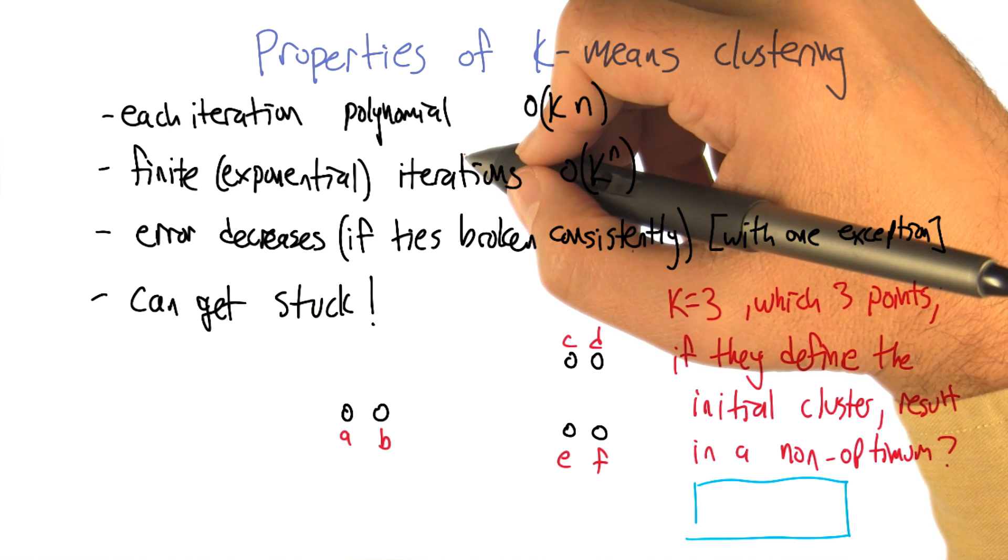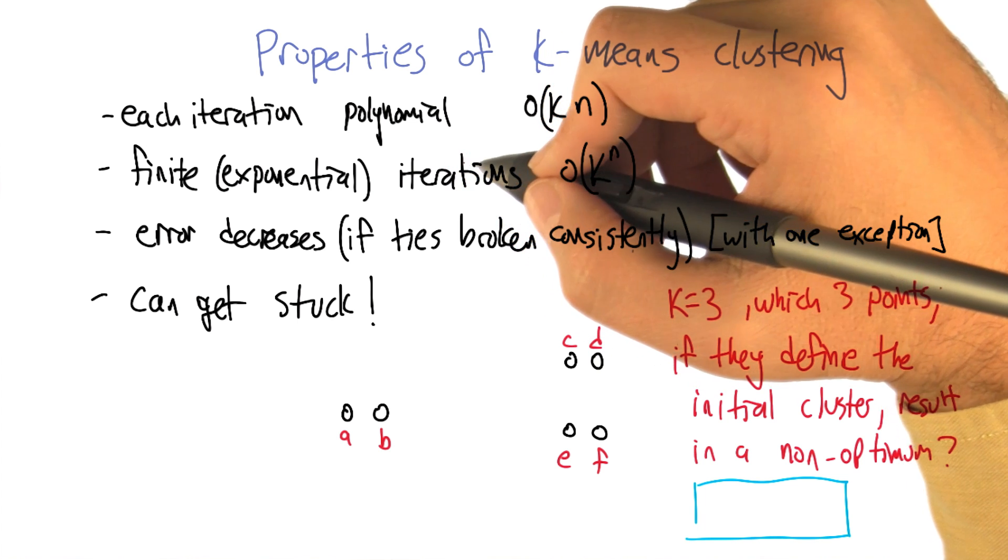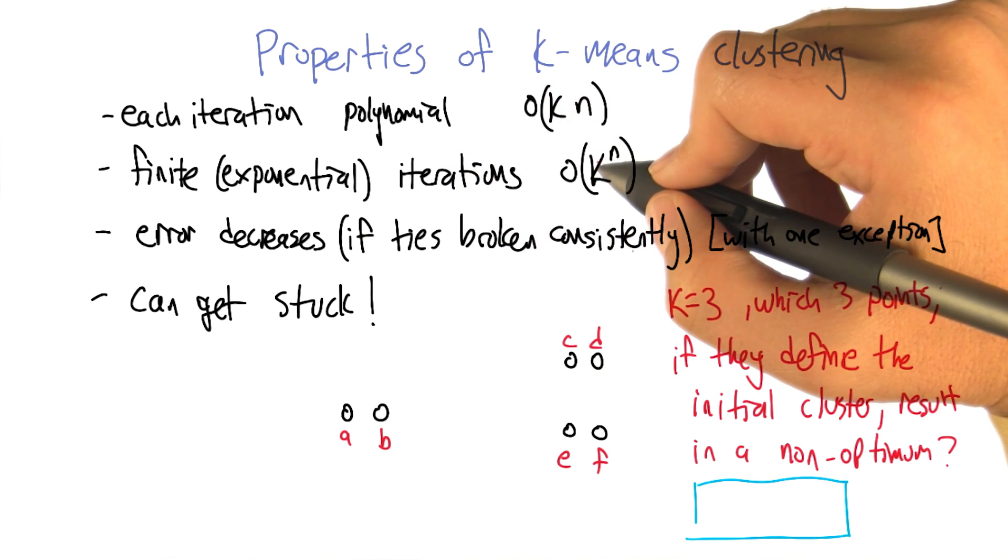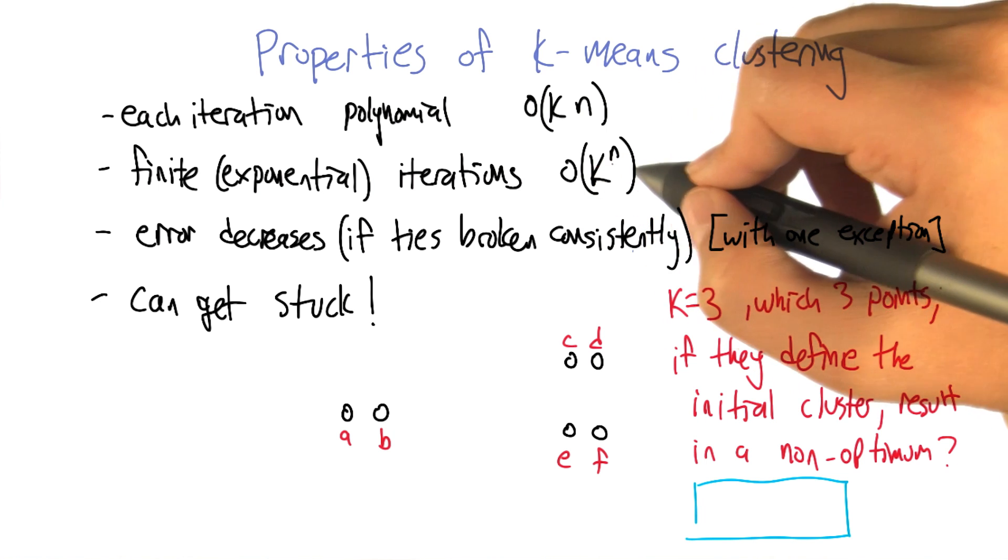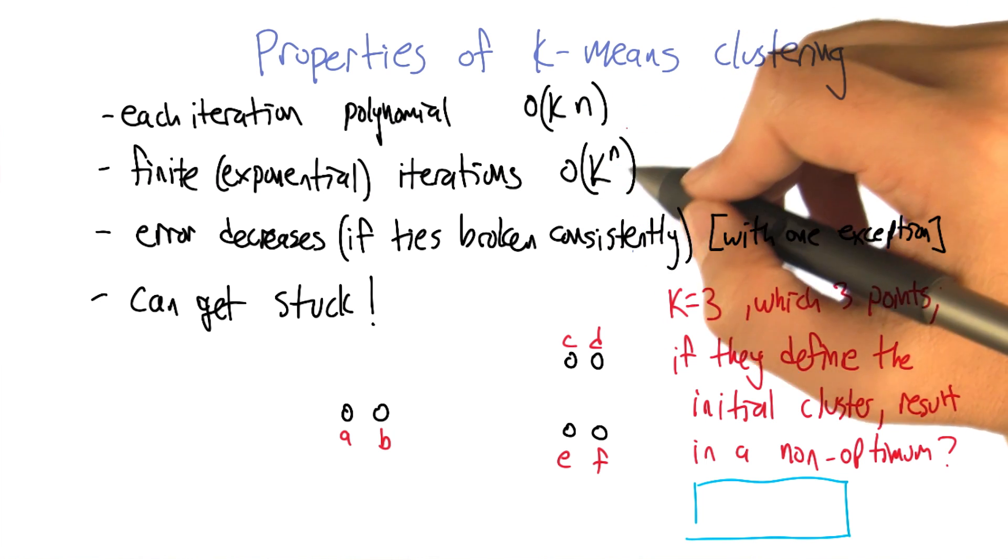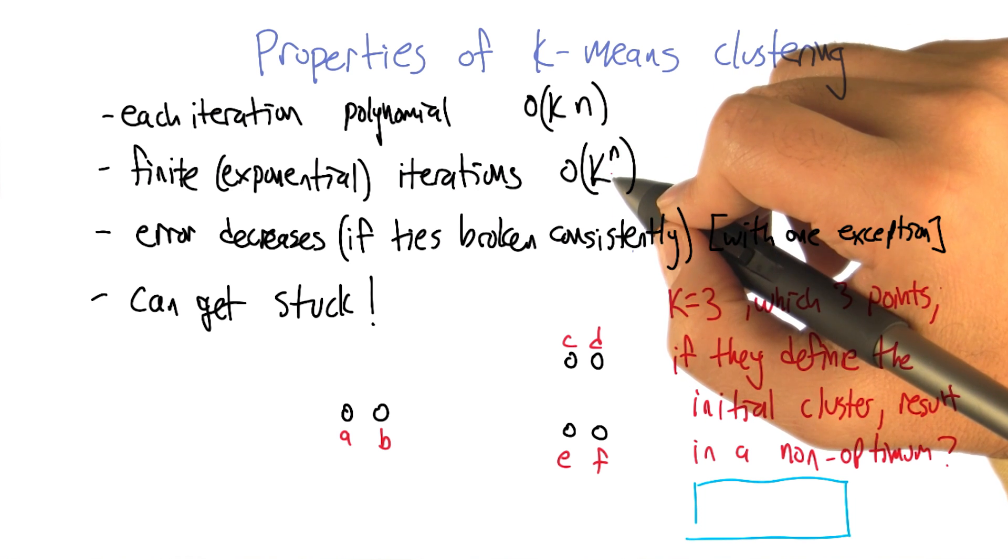Then you were just going through the argument as to why the number of iterations would be finite and exponential, and the exponential is like k to the n. And what you said was the first of the n objects can be in any of k clusters, and the second can be in any of k clusters, and the third can be in any k clusters. So we get a total of k to the n different ways of assigning points to k clusters.